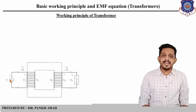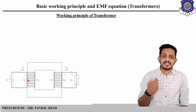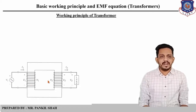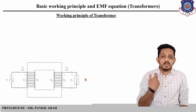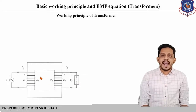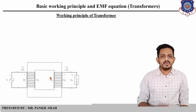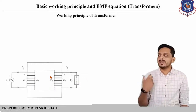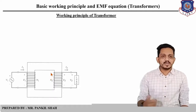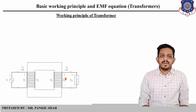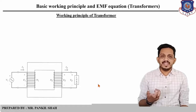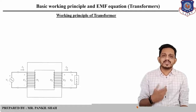V1 is the supplied voltage to the primary winding and V2 is the output voltage to the load. I1 and I2 are the currents flowing through the primary and secondary winding respectively. Flux phi will start linking with this core, and E1 and E2 are the self-induced EMF in these two windings.